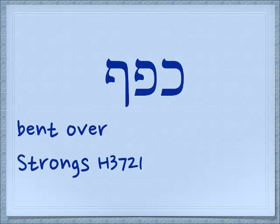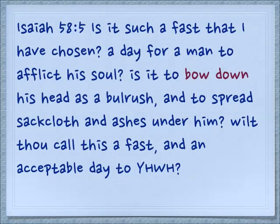Here we can see the kaf next to the pei and next to the pei's final form, so we can compare these letters and how they go together. This word is a verb — kafaf — and it means to be bent over. The person who is bent over has that same kind of hollow shape. In Isaiah 58:5: 'Is it such a fast that I have chosen, a day for a man to afflict his soul? Is it to bow down his head as a bulrush and to spread sackcloth and ashes under him? Wilt thou call this a fast and an acceptable day to Yehovah?'